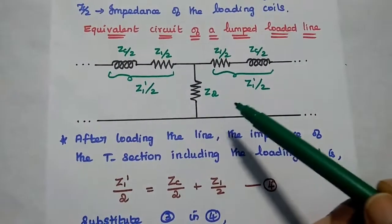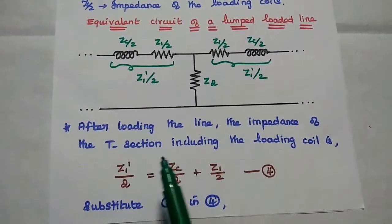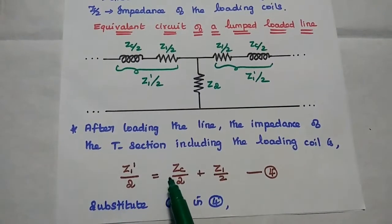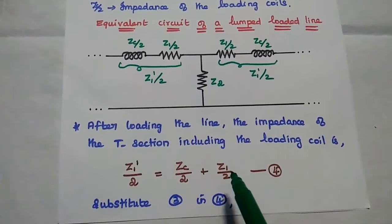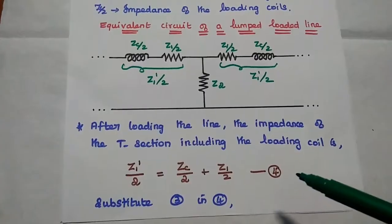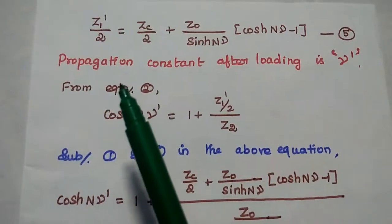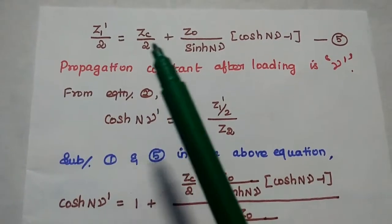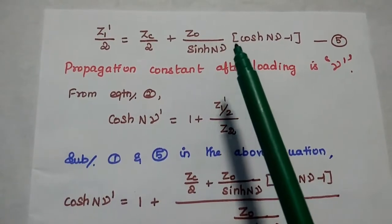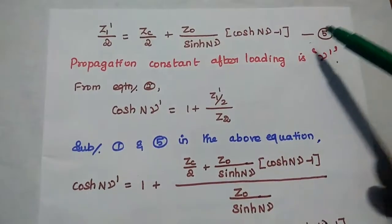The same applies here for Z1 dash by 2; there is no change in the shunt admittance. After loading the line, the impedance of the T-section including the loading coil is: Z1 dash by 2 is equal to ZC by 2 plus Z1 by 2, since both are in series connection. Consider this as the fourth equation. Next, substituting the third equation into the fourth equation gives us the fifth equation: Z1 dash by 2 is equal to ZC by 2 plus Z0 by sinh(Nγ) multiplied by (cosh(Nγ) minus 1).